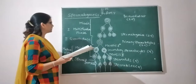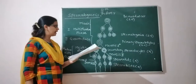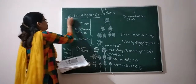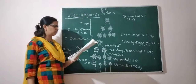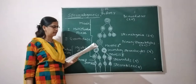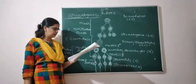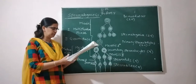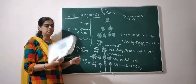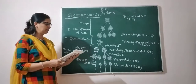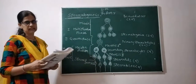Spermatogenesis means the process of formation of male gametes, which is nothing but sperm. Sperms are taayar from the germinal epithelium of the testes. The testes are the site of the process of spermatogenesis.